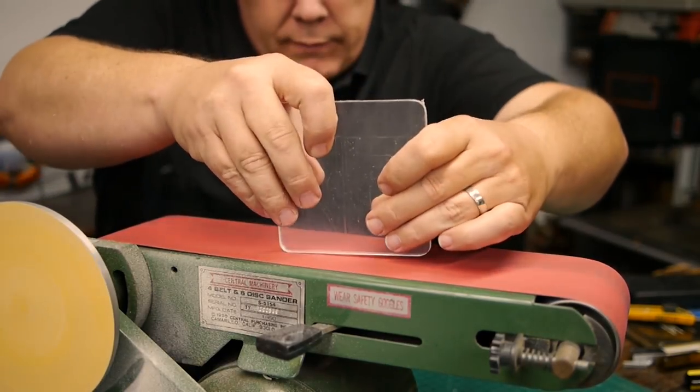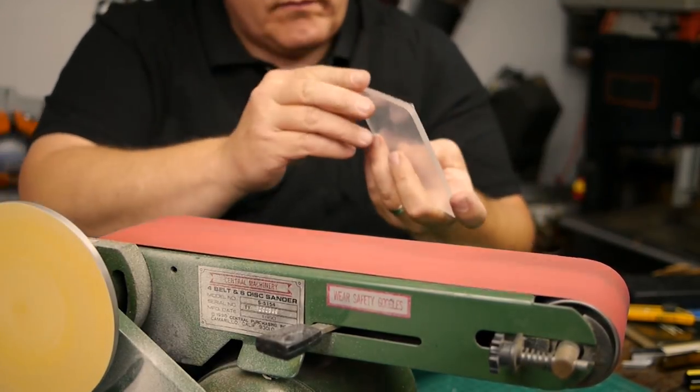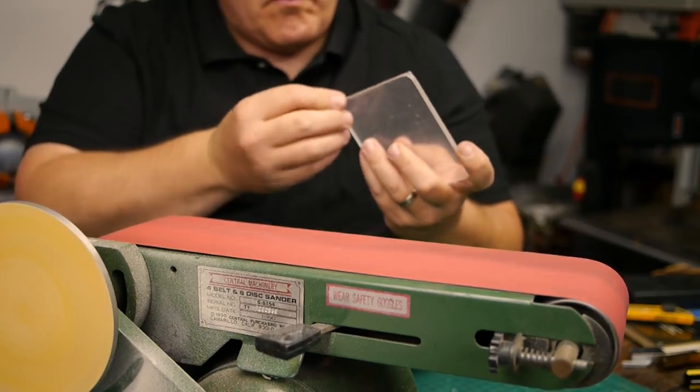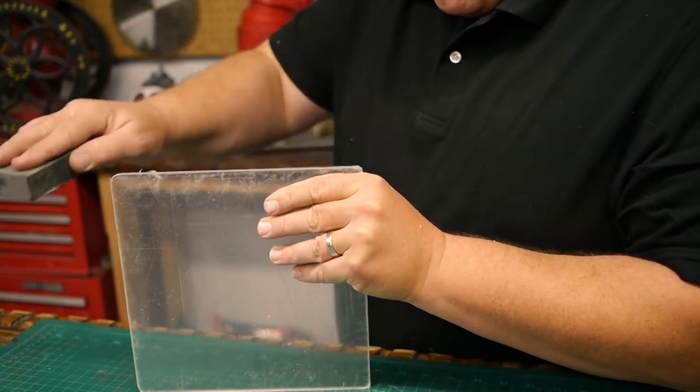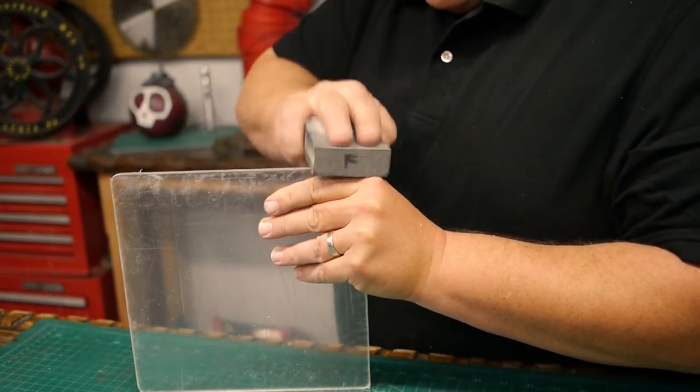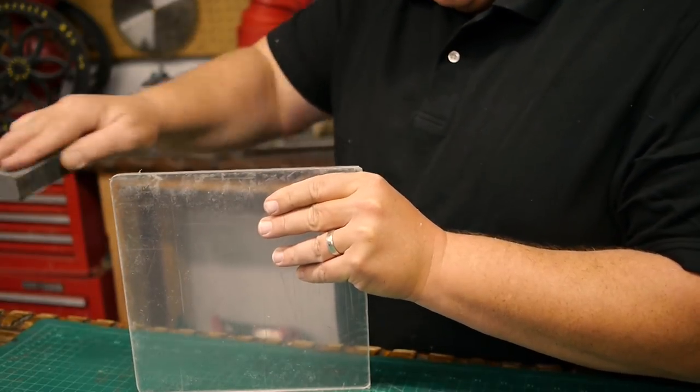I just carefully rounded off each corner on the belt sander, being careful not to sand the whole edge. Then I sanded each edge by hand to remove as much of the marks left by the table saw when the pieces were first cut.